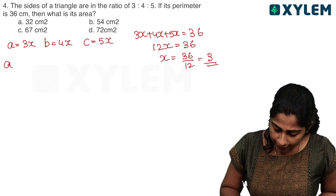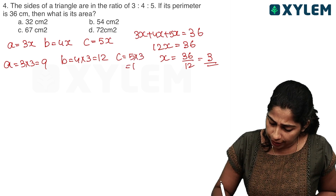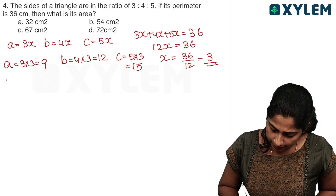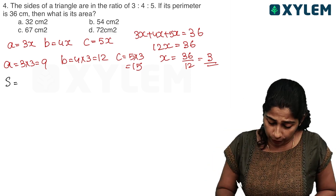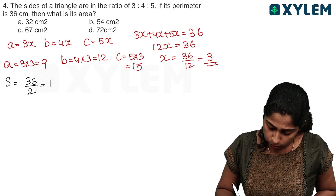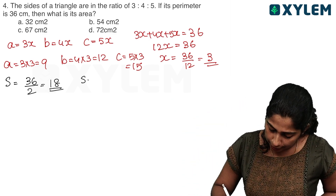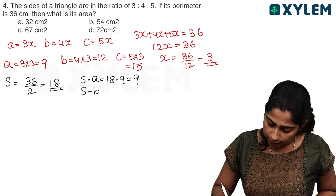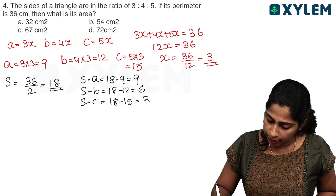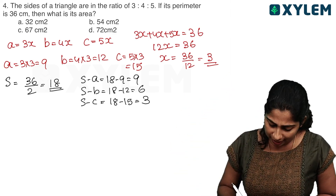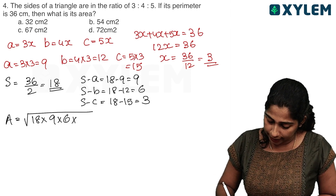So we have a equals 3 times 3 equals 9, b equals 4x equals 12, c equals 5x equals 15. S is the half of the perimeter: 36 divided by 2 equals 18. S minus A is 18 minus 9 equals 9. S minus B is 18 minus 12 equals 6. S minus C is 18 minus 15 equals 3. So the area equals root of 18 into 9 into 6 into 3.